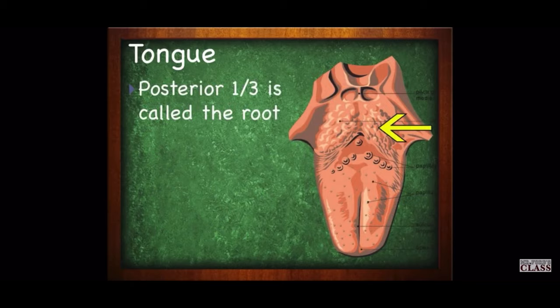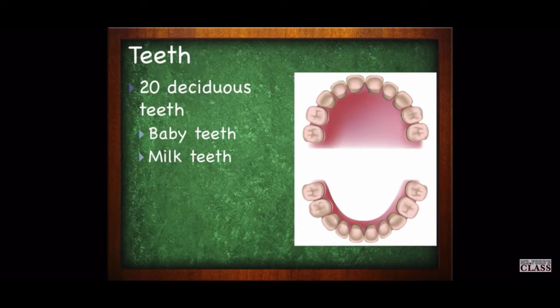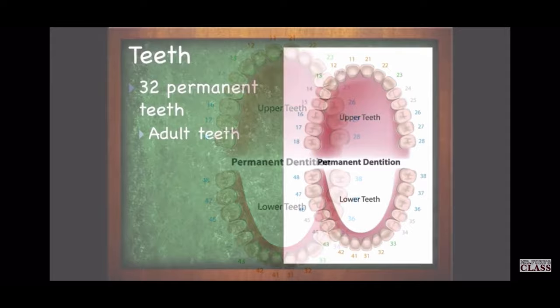The teeth are collectively known as your dentition. Baby teeth — deciduous or milk teeth — number 20 total. Permanent or adult teeth number 32 total. Numbers sometimes appear on exams, so be sure to memorize how many baby teeth and how many adult teeth a person has.